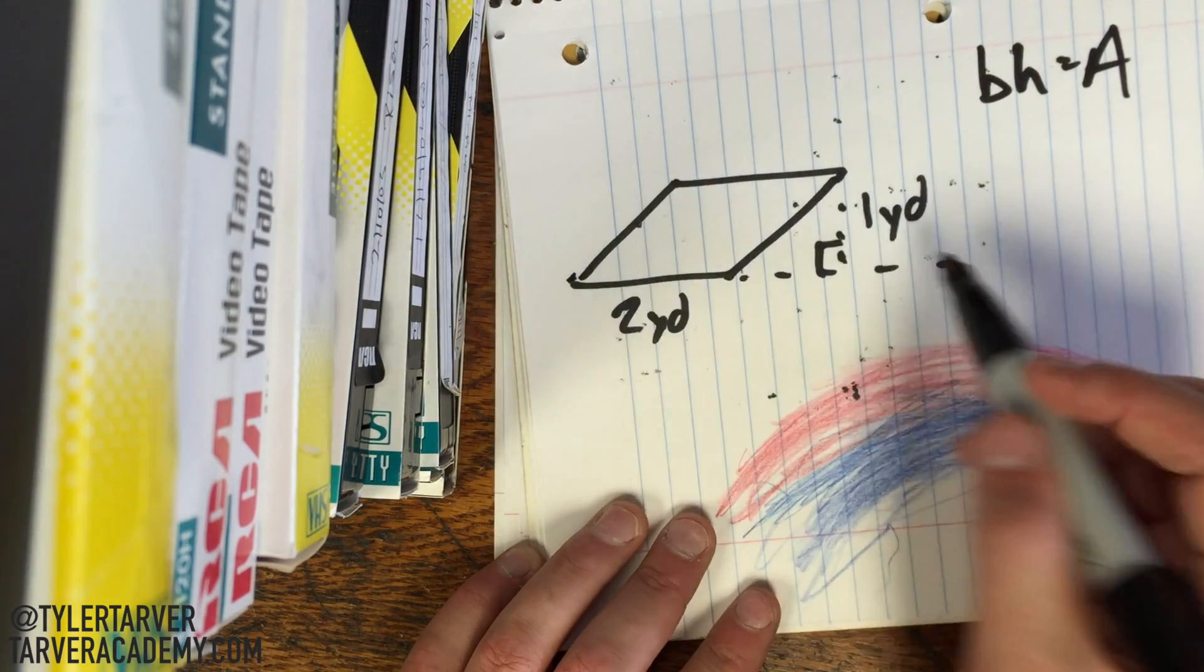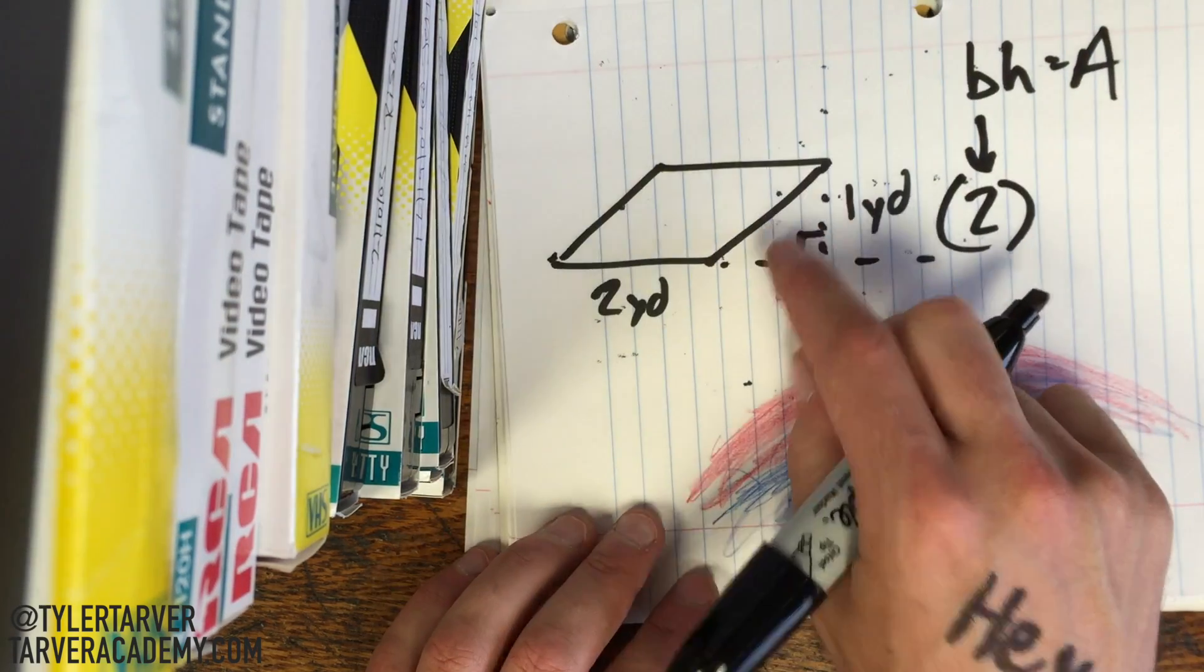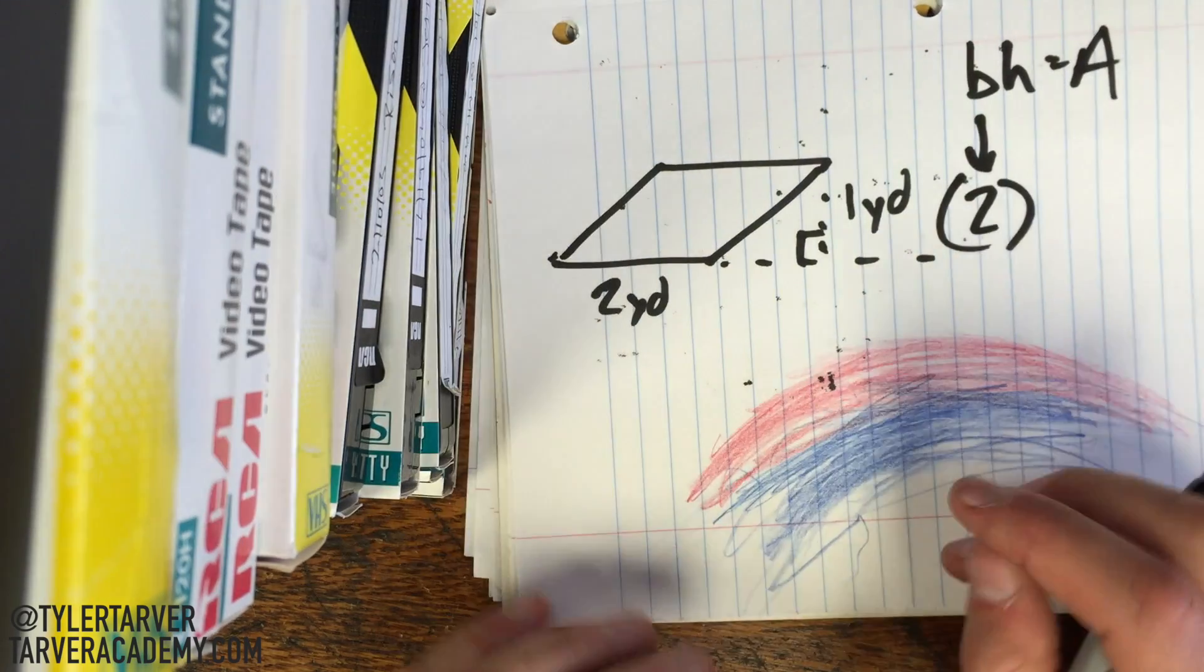We're gonna use two yards. So in place of B, I'm gonna put two. All right, now for height, you're thinking to yourself, well, they only gave me one other number, so that has to be the height. Yeah, well, that's a good guess, okay?